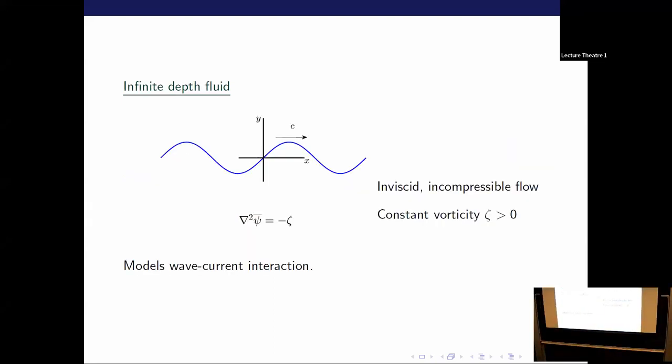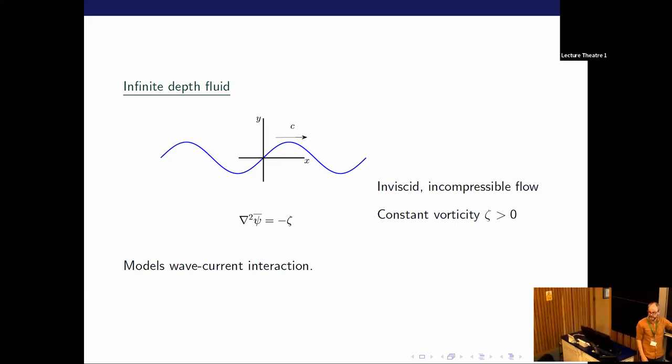Here's the basic setup. There's a free surface, that's the blue line, and waves propagating along at speed little c. The flow is inviscid, incompressible, but not irrotational as a constant vorticity field. I'm sorry I'm going to switch notation now. Darren's zeta was something else. I need omega to be frequency in a minute, so I'm going to use zeta for vorticity. You have Poisson's equation to solve in the bulk of the fluid, which goes on forever down here, so it's infinitely deep water.